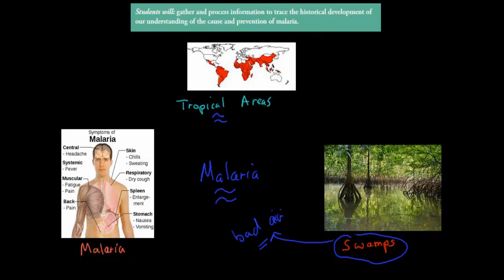The reason I mention all this is because the document says students should gather and process information to trace the historical development of our understanding of the cause and prevention of malaria. So we're going to talk about the historical developments and the increase of our understanding of the cause and prevention of malaria.